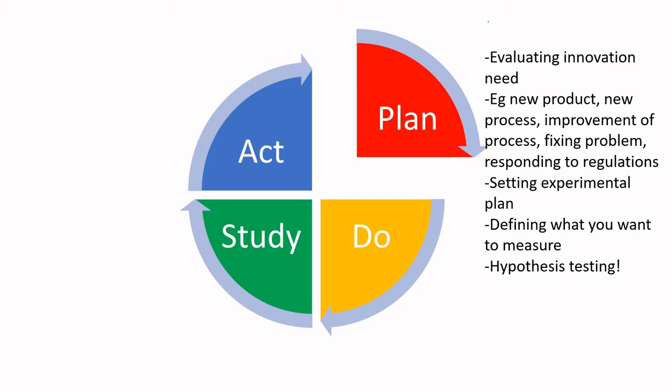Within the scientific method, the Plan stage is where you're really setting your hypothesis and methodology in place. Those who have taken chemistry classes know we spend a lot of time thinking about the scientific method and experimental design. That whole experimental design comes into play here, but when you're in industrial systems, you may not be thinking of it as an experiment in the same way you would in a chemistry class.